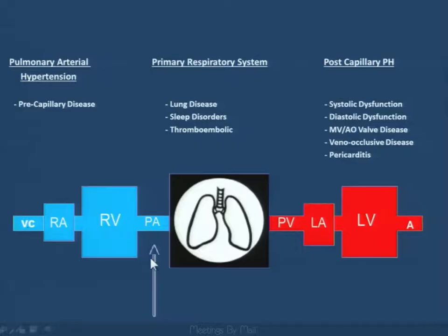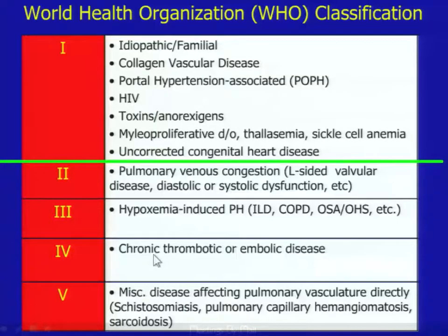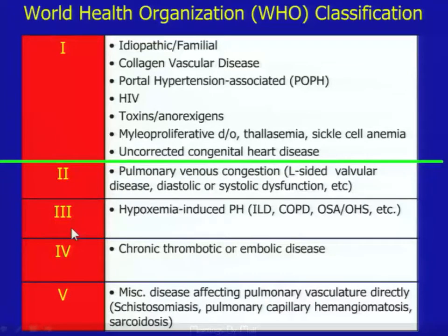Pre-capillary pulmonary arterial hypertension — the WHO classification uses categories Roman numerals 1 to 5. A large group including idiopathic, collagen vascular diseases, HIV, and toxins would be classified as grade 1. Pulmonary venous, grade 2, is the most common, secondary to cardiac disease. Hypoxia is grade 3. Pulmonary thromboembolic is grade 4, and then some rare conditions round out grade 5.